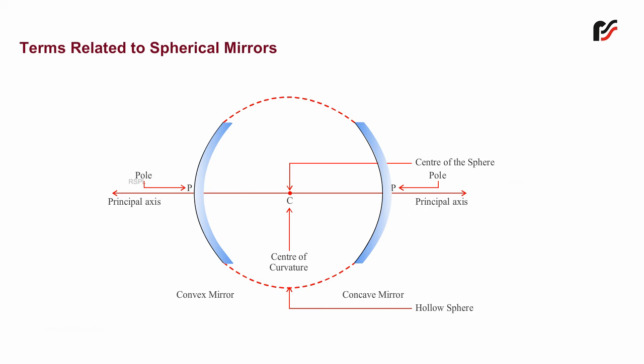e. Principal focus. The point F on the principal axis where a parallel beam of light parallel to the principal axis actually meets in case of a concave mirror, or appears to come from in case of convex mirror, after reflection is called principal focus.